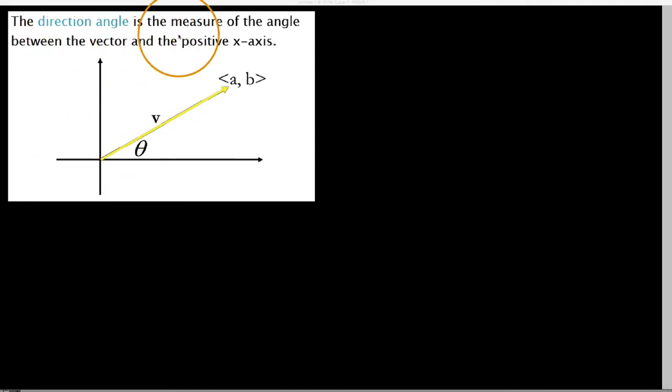We say the direction angle is the measure of the angle between the vector itself, so this yellow vector you see here, and the positive x-axis. So we say the positive x-axis is this portion right here, but we say that the direction angle is always this angle theta between there and there.